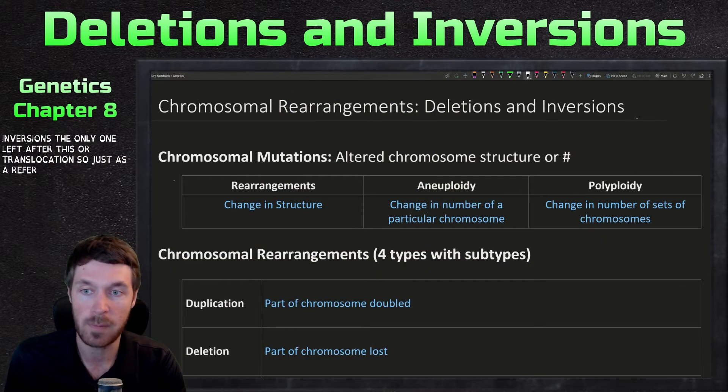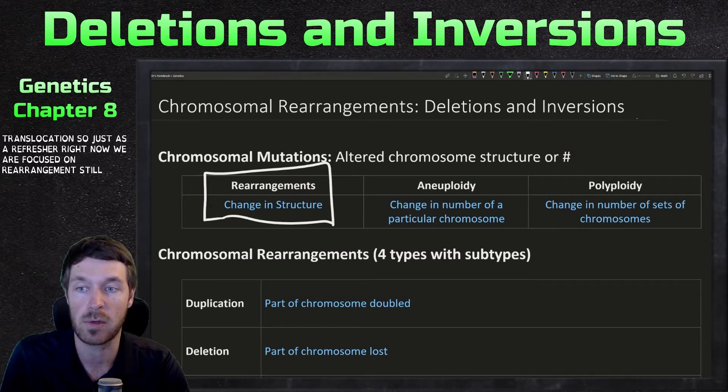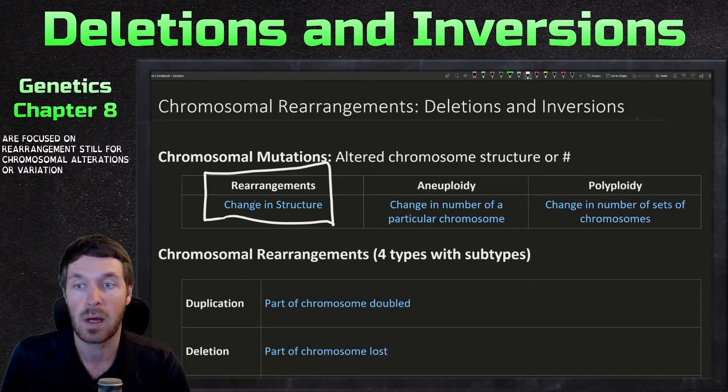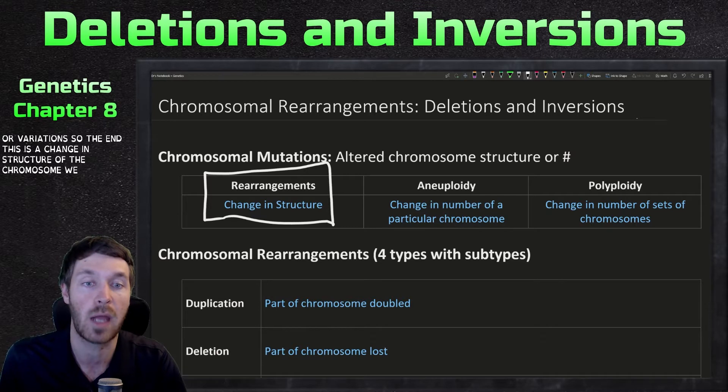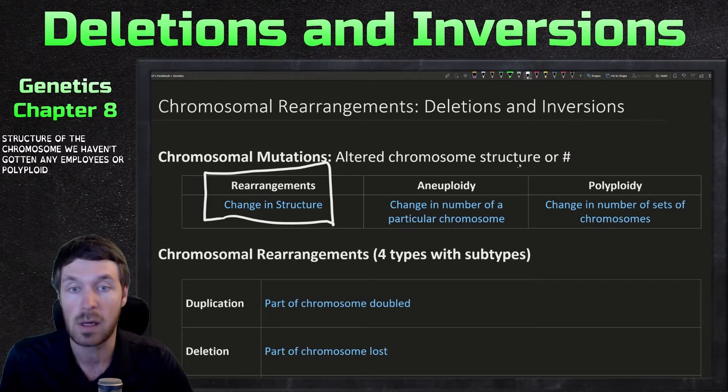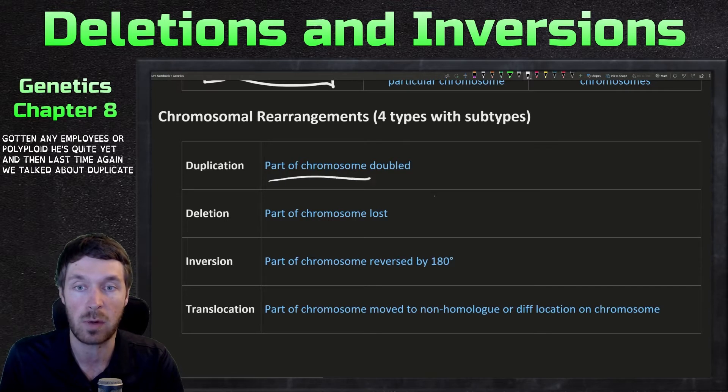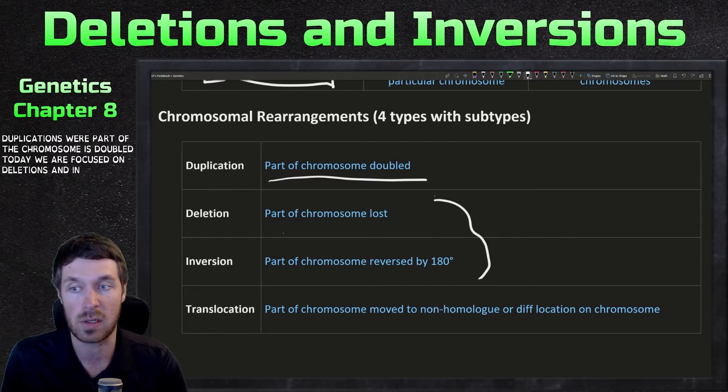So just as a refresher, right now we are focused on rearrangements still for chromosomal alterations or variations. So this is a change in structure of the chromosome. We haven't gotten to aneuploidies or polyploidies quite yet. And last time we talked about duplications where part of the chromosome is doubled. Today we are focused on deletions and inversions.